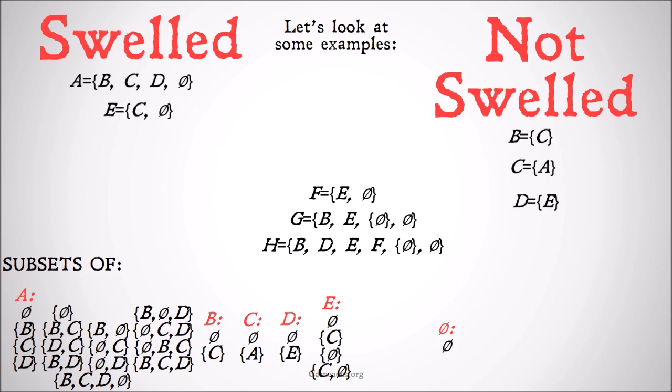F contains as its members E and the null set. However, F does not contain all the subsets of E. The subsets of E are: the null set — F contains that; the set of C and the null set, which is defined as E — F contains that. But F does not contain the set of just C, nor the set of the null set. Because it doesn't contain those and they are subsets of one of its members, F is not swelled.